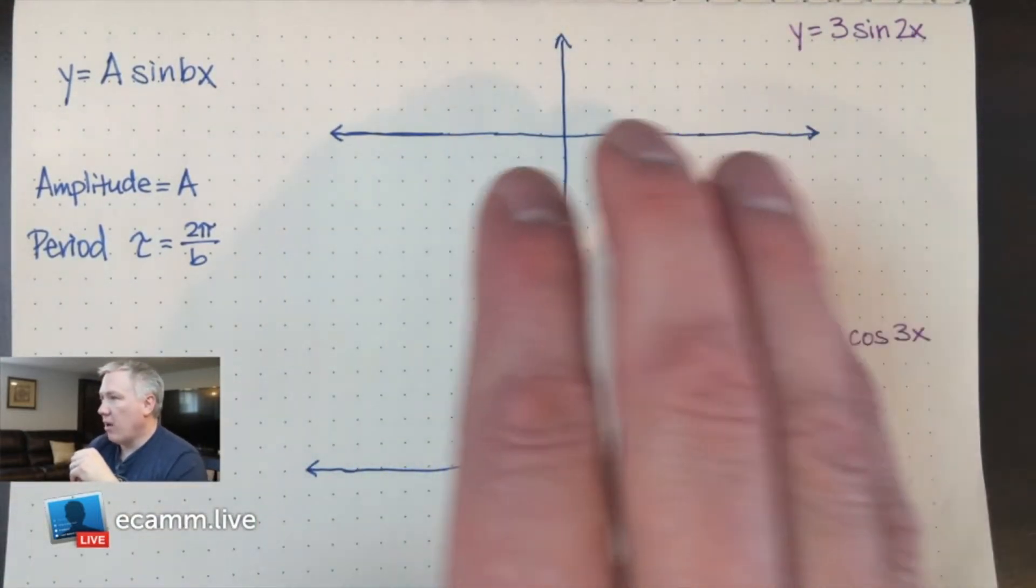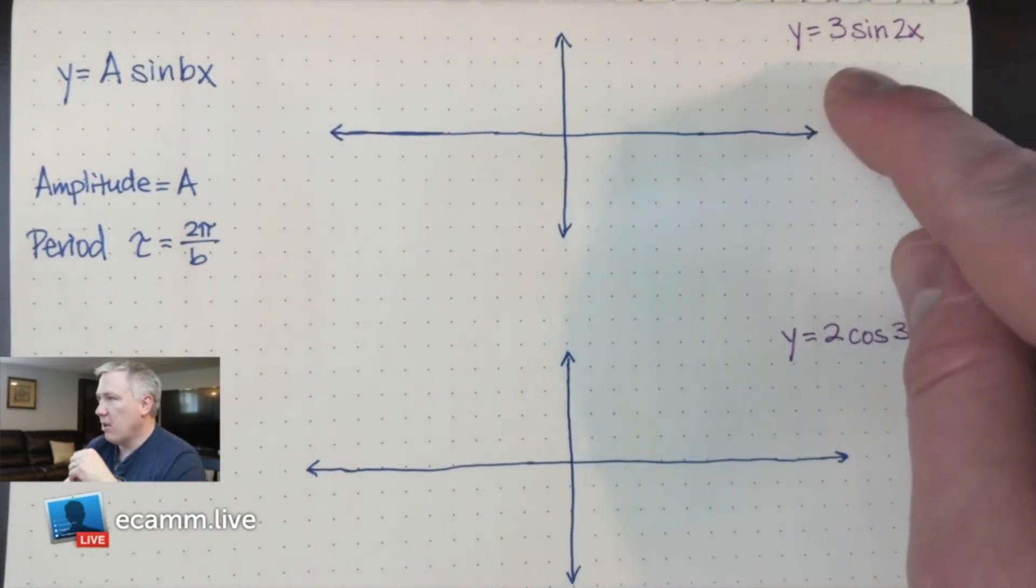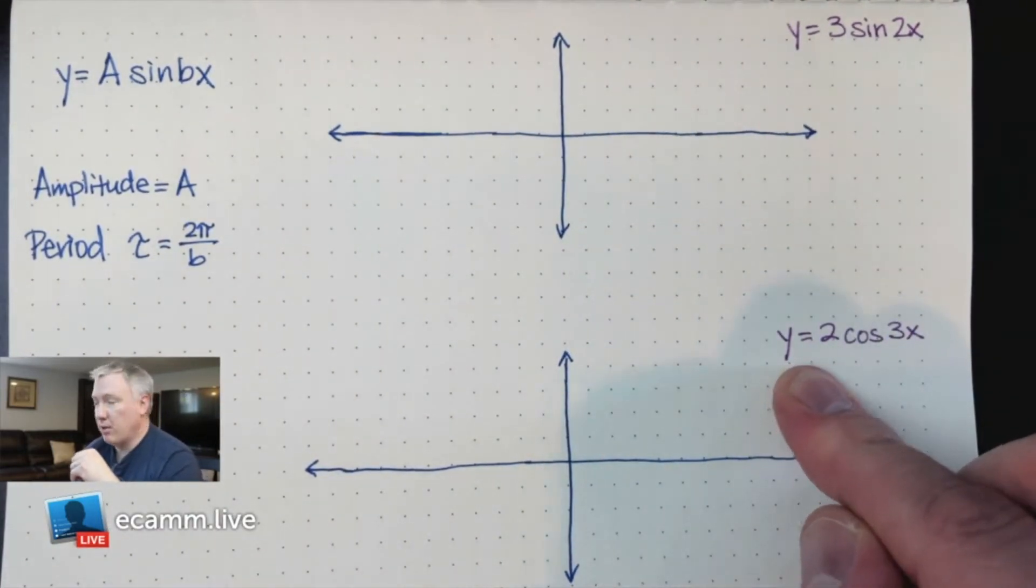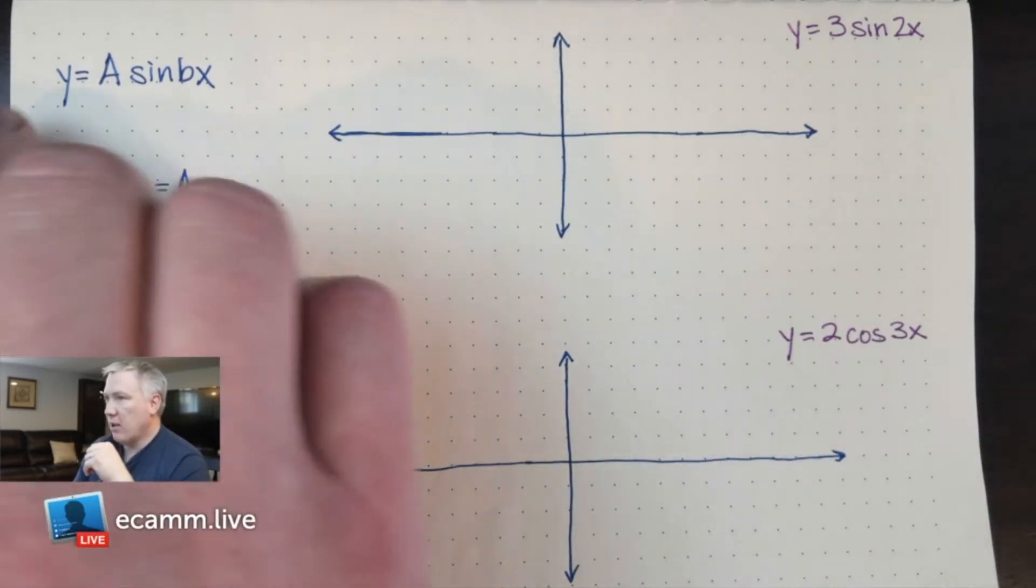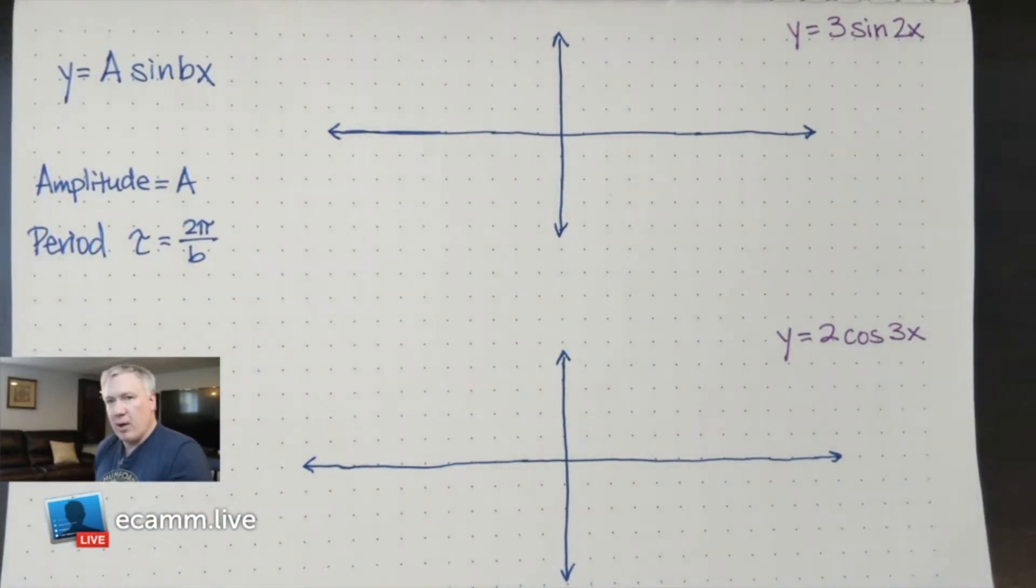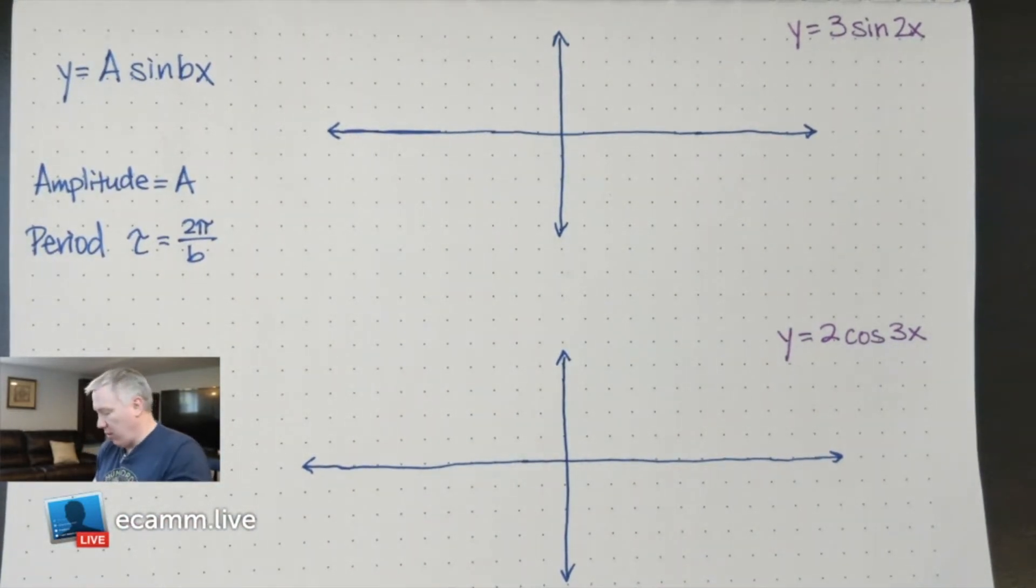First, I've got two grids here. We're going to graph this function up here, y equals sine 2x, and then y equals 2 cosine 3x. Over here in the top corner, I have our formulas, and this is a generic formula. We're going to actually expand on this as we work through this.